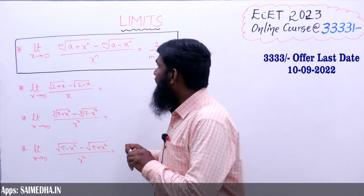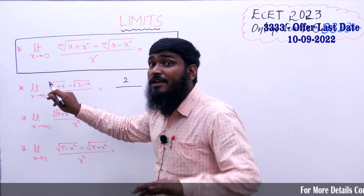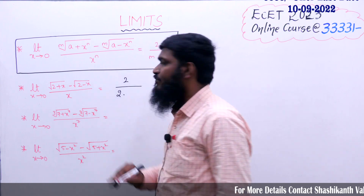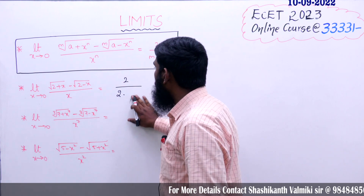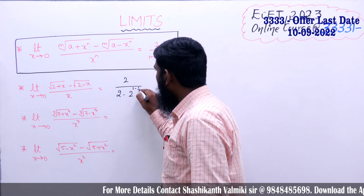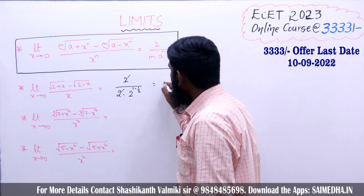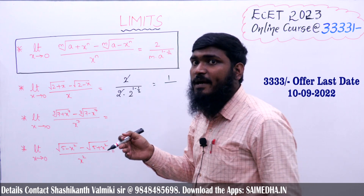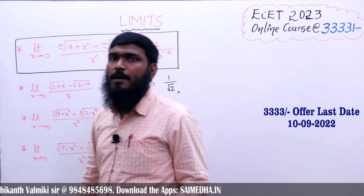Now we can write the direct answer. First we write 2 divided by m. The root is a square root, so m equals 2. Into a to the power of (1 minus 1 by m): a equals 2 and m equals 2, so this becomes 2 divided by 2, with 2 and 2 cancelling, giving 1 divided by 2 to the power of (1 minus 1/2), which is 2 to the power of 1/2, which is root 2. So the answer is 1 by root 2.